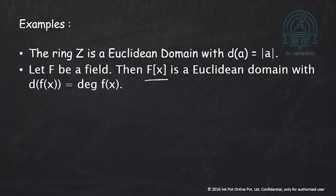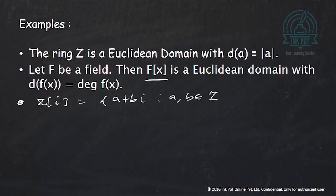One more example: the ring of Gaussian integers ℤ[i], which consists of elements of the form a plus bi such that a and b belong to ℤ, is a Euclidean domain. The function d is defined as d(a + bi) equals a squared plus b squared.